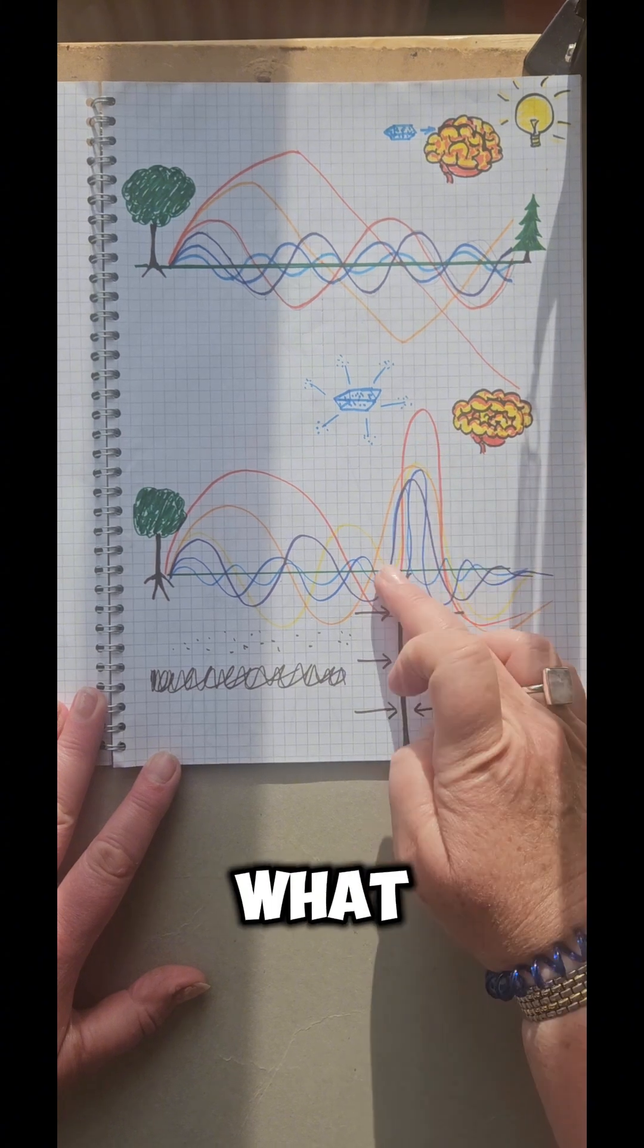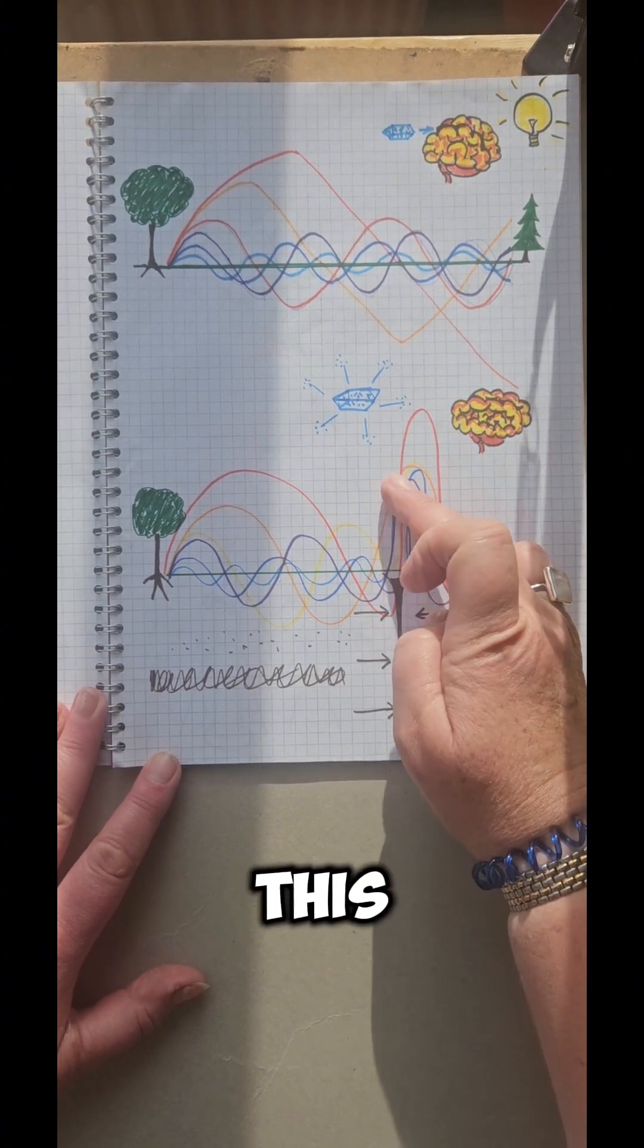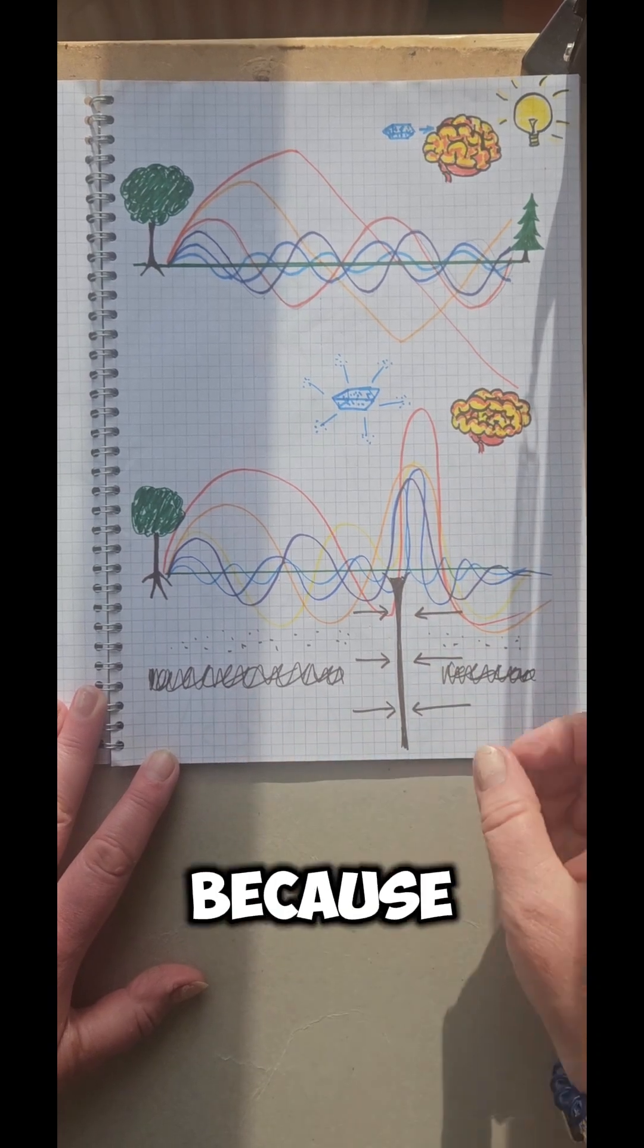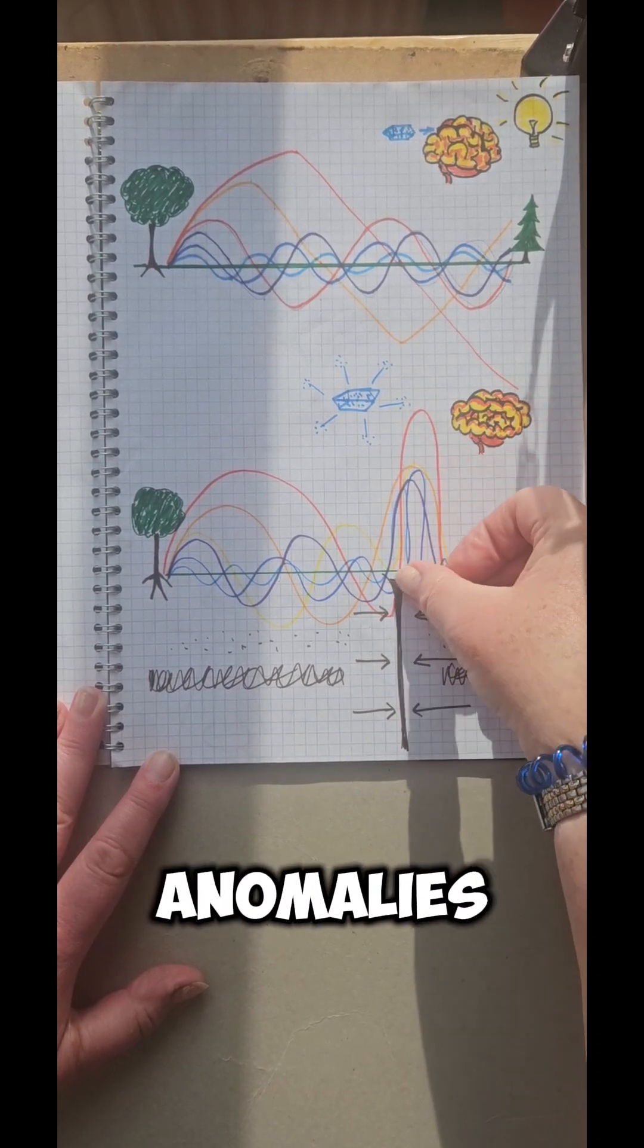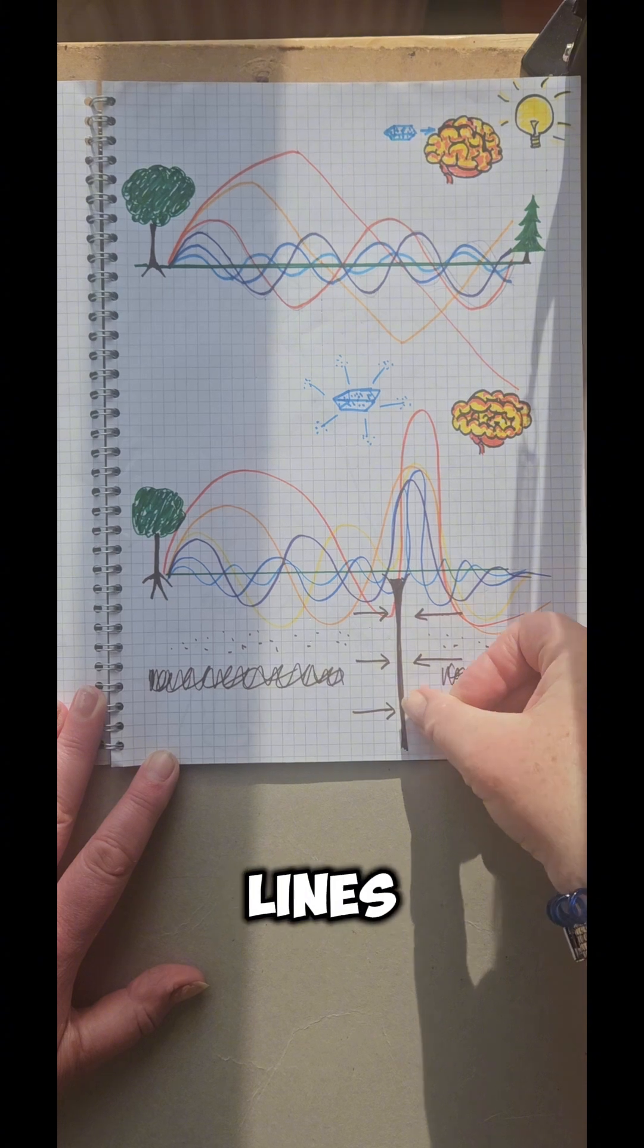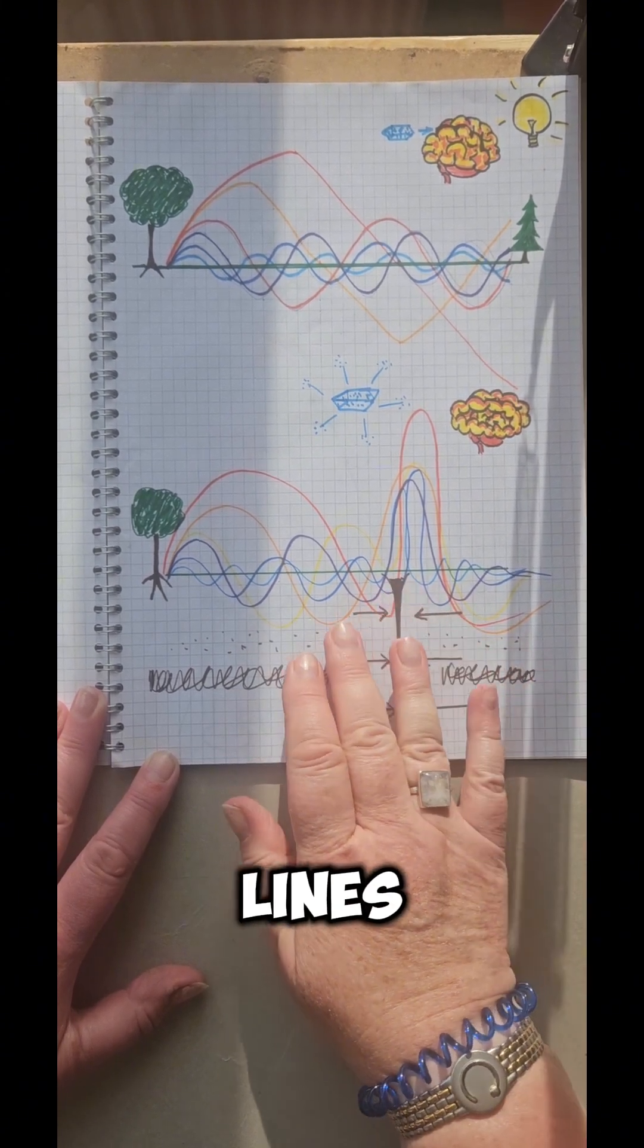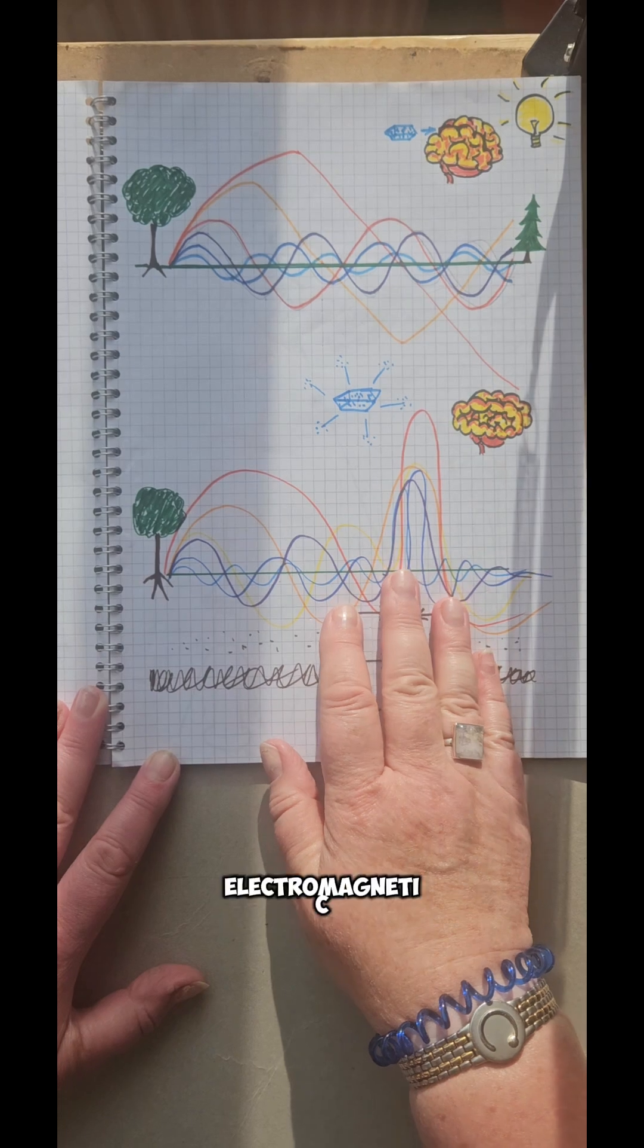But what is happening here? We have this massive spike in electromagnetic energy. This happens because these geomagnetic anomalies happen when we have fault lines and fissures, particularly under the ground. These fault lines create these huge spikes in electromagnetic energy.